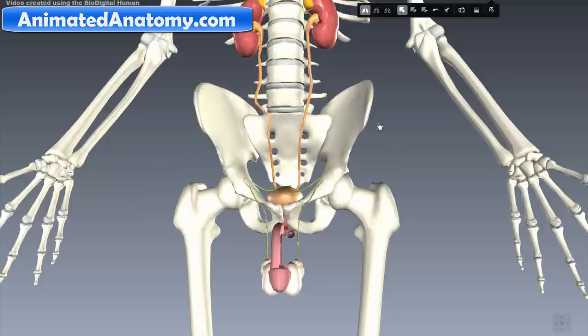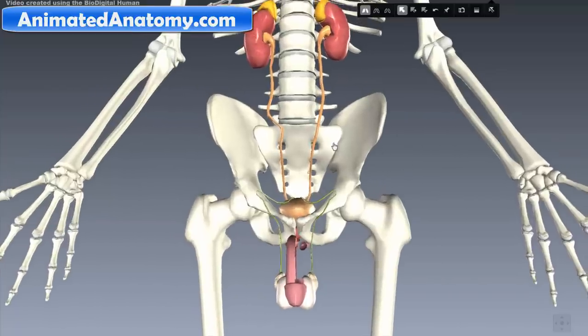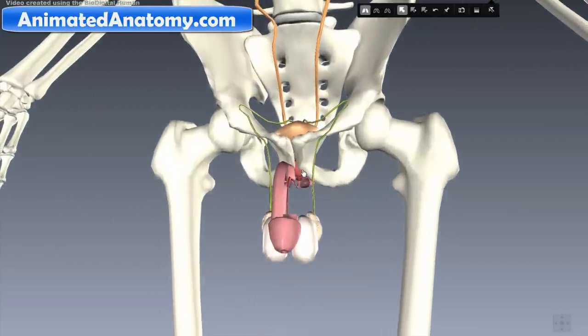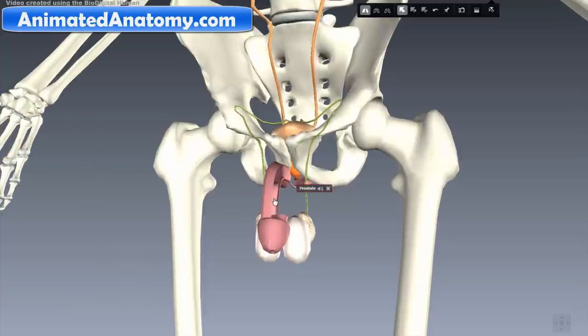The urinary system can be affected by disorders and diseases of other systems. For example, here this is the prostate and prostate is part of the reproductive system. The prostate can grow in older men and that way it can prevent the urine from leaving the bladder.